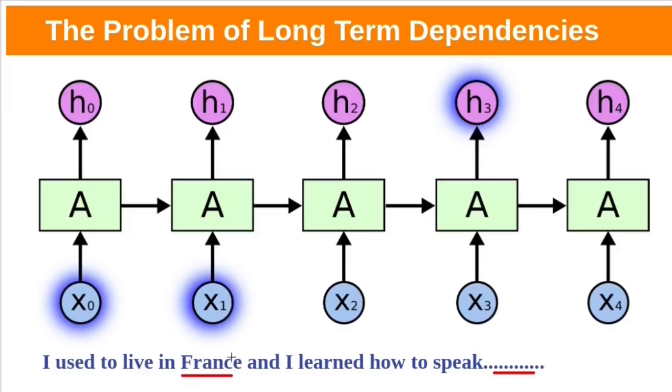In this case, gap between relevant information and the place that it needs is small. This reference is needed here. This gap is small. In this case, RNN will be able to handle it because it has short term dependencies.